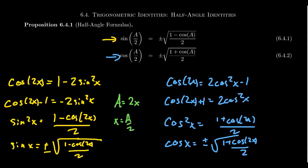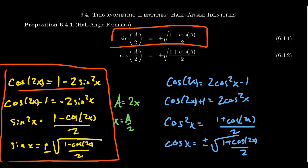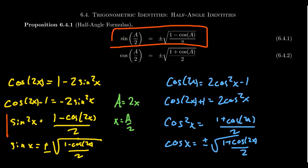Why go through all the details of proving these formulas rather than just memorizing them? First, by seeing where they come from, we have a much better chance of memorizing them — and if we can't remember them, we could reproduce them on the fly. But another important observation is that there are alternative versions of this. This one formula is equivalent to all of these related equations, including the double-angle identity we saw before. If you know one, you know the other, though one is often more useful than another — particularly in calculus.